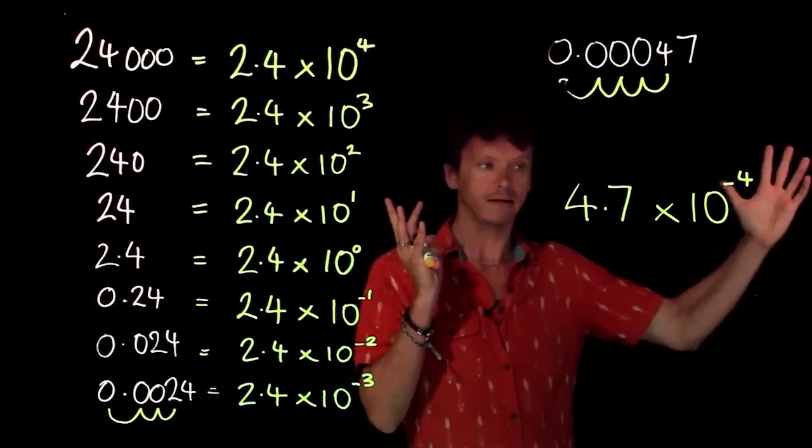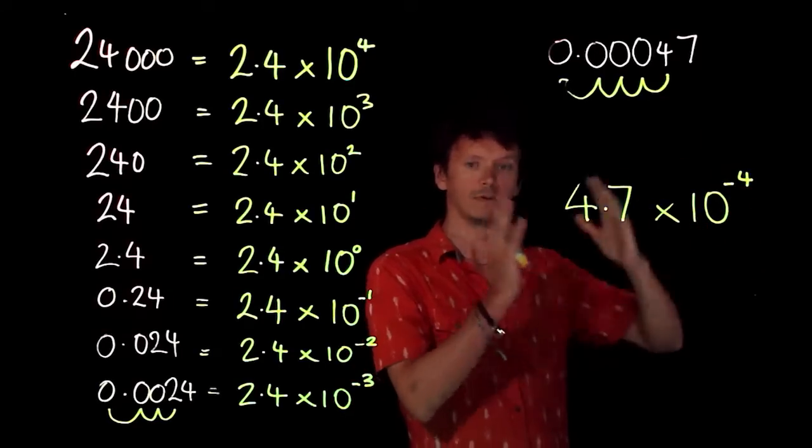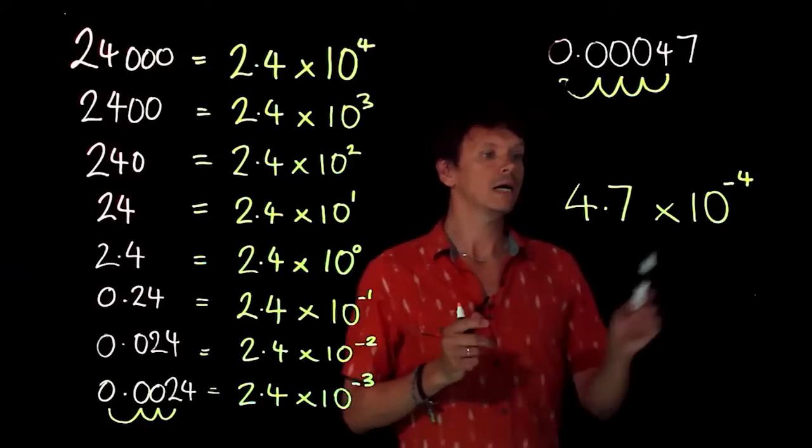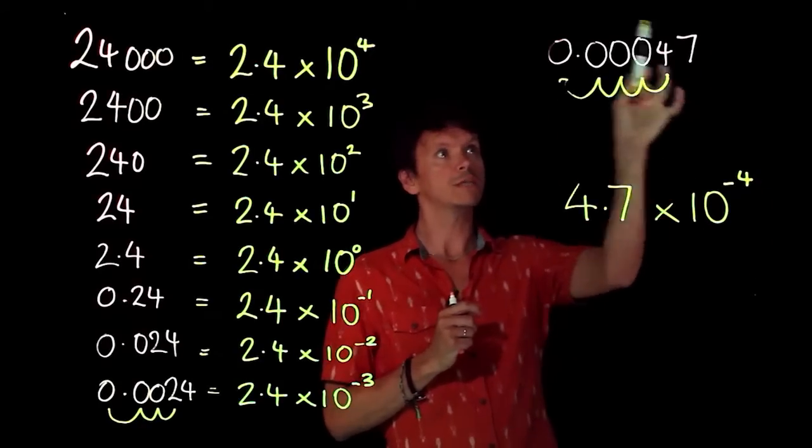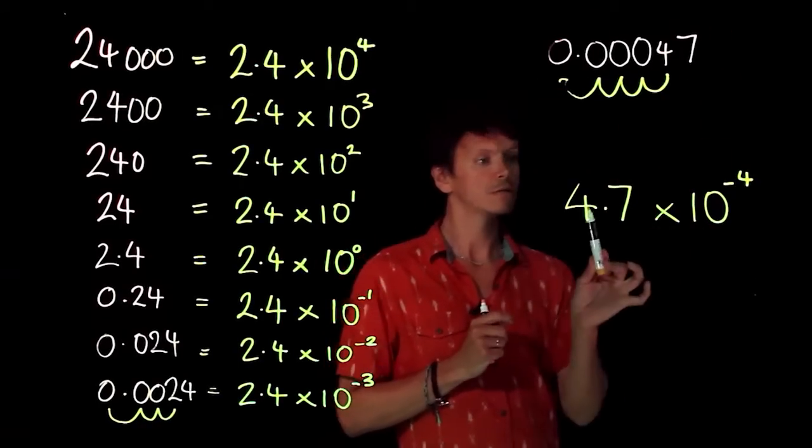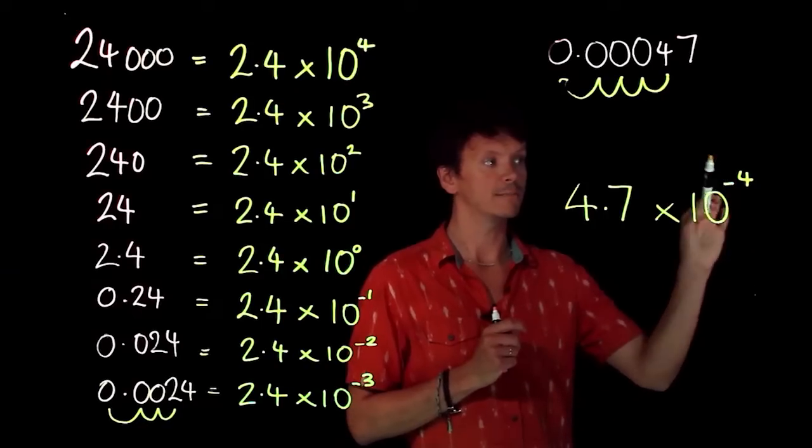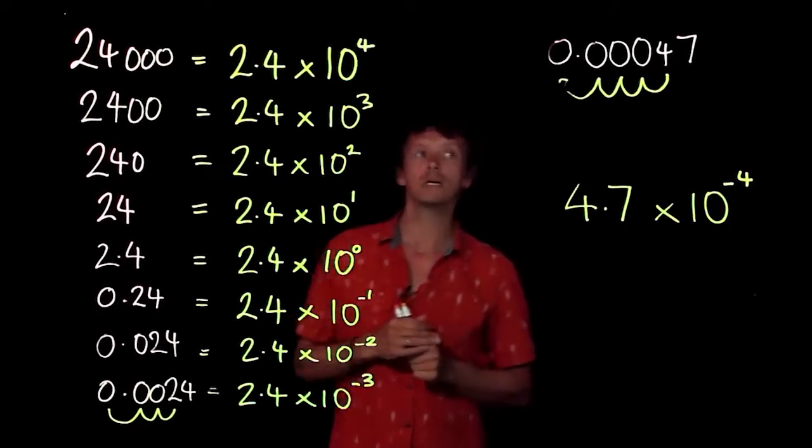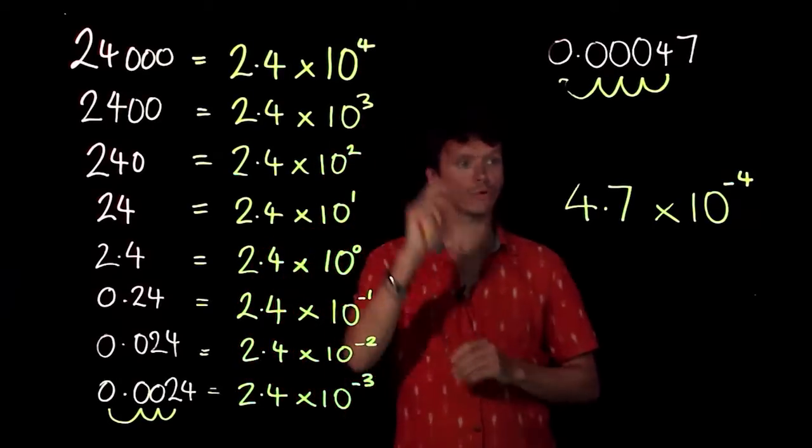It would become 47, 470, 4700. That's not what we're doing. We're looking to make this a very small number. 4.7 times 10 to the minus 4, and that's how we convert into scientific notation or standard form with very small numbers using negative powers.